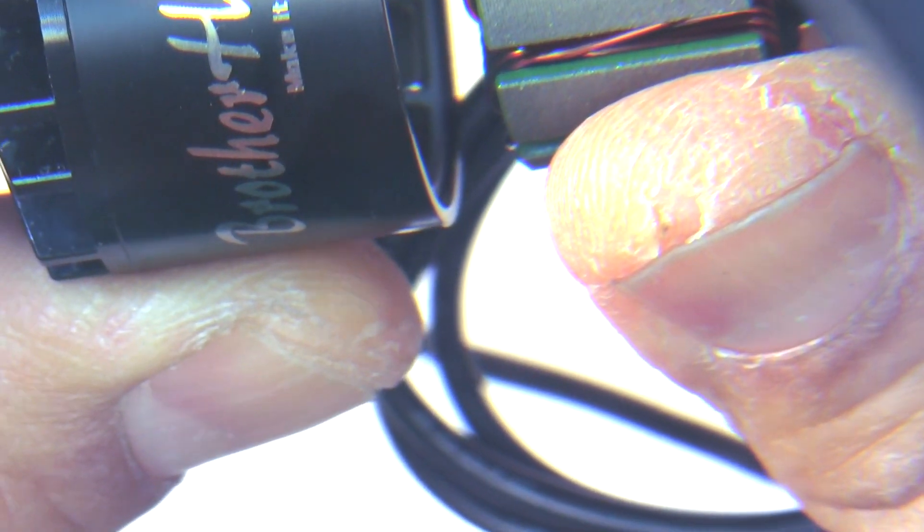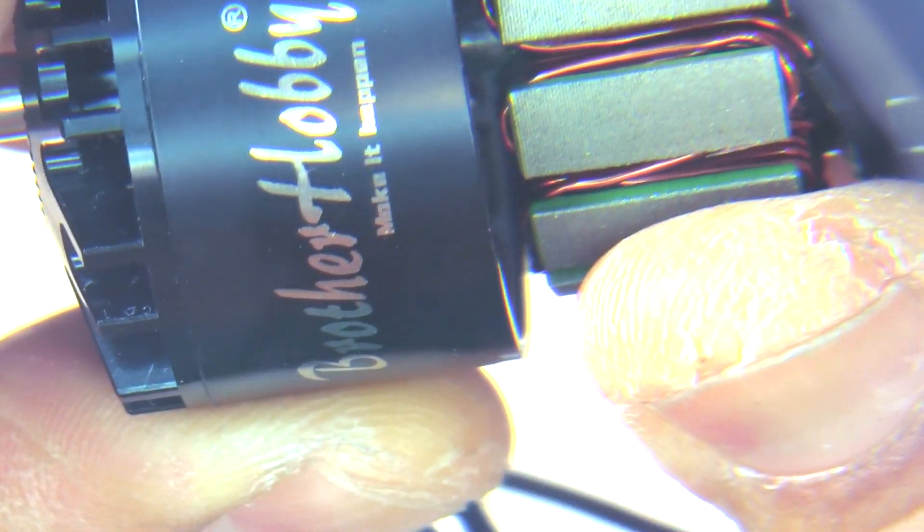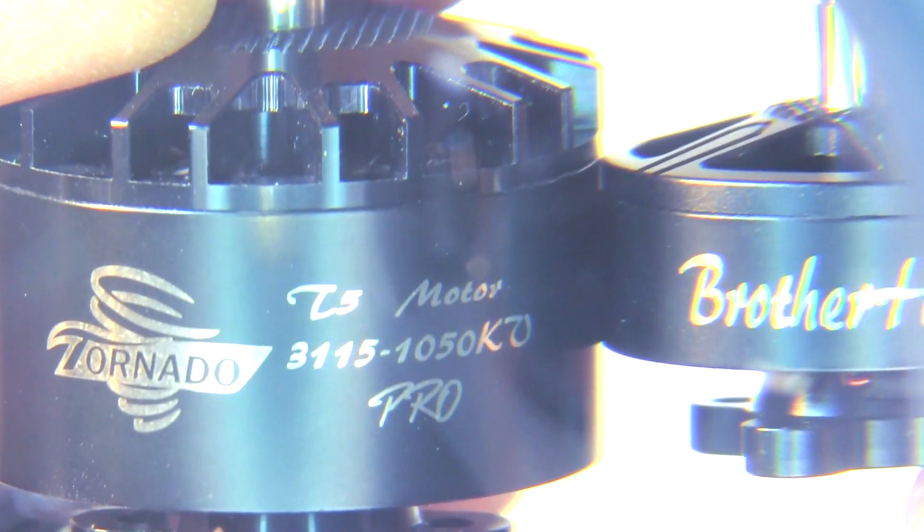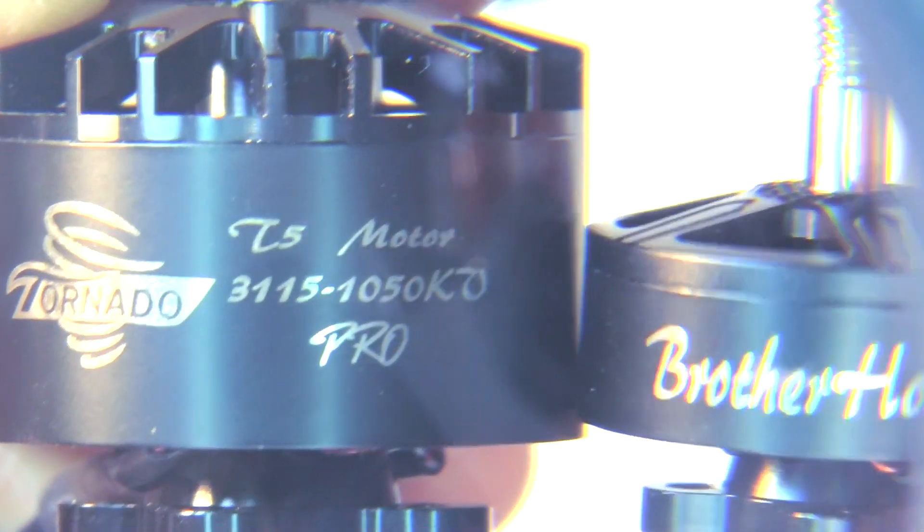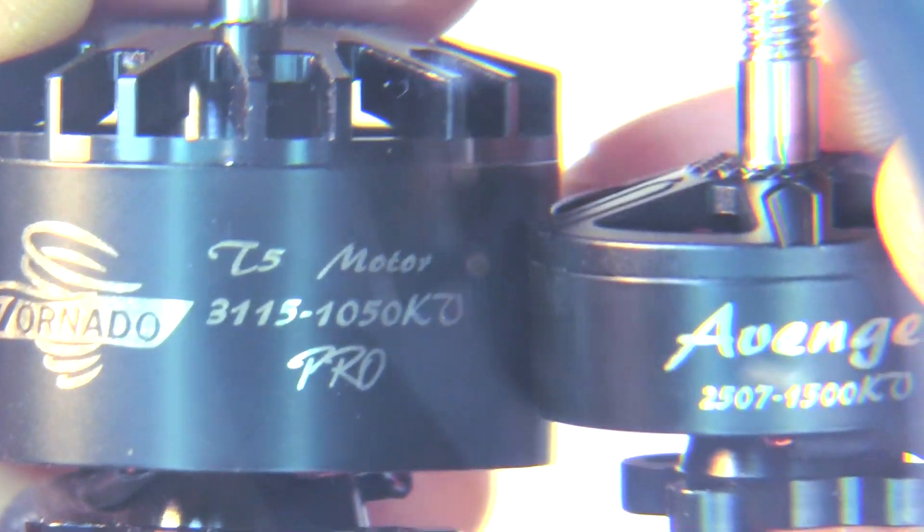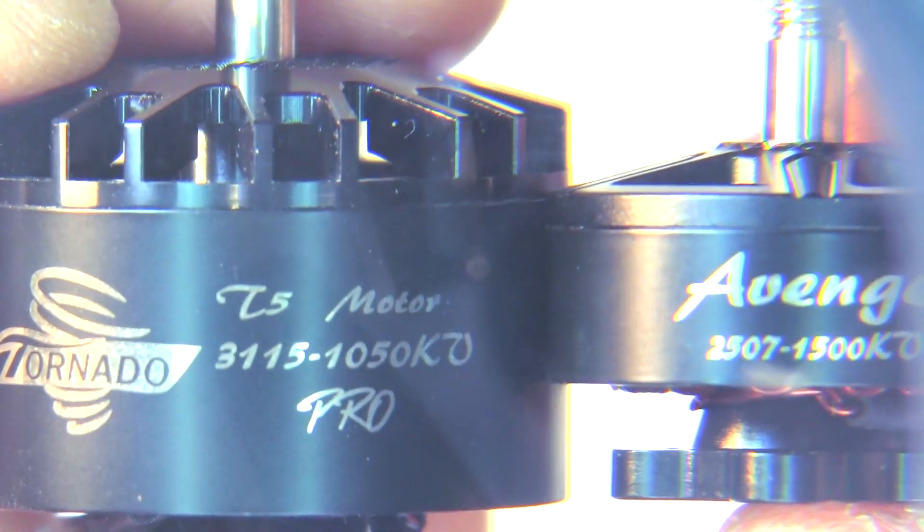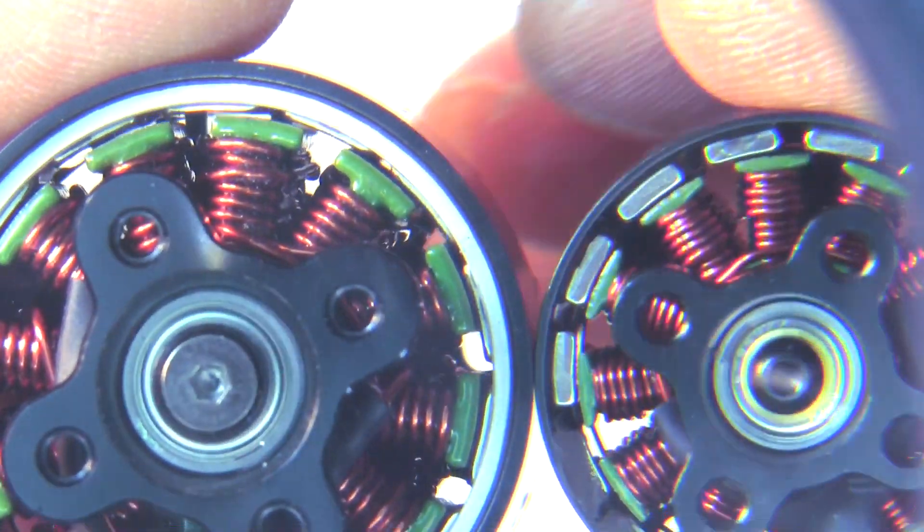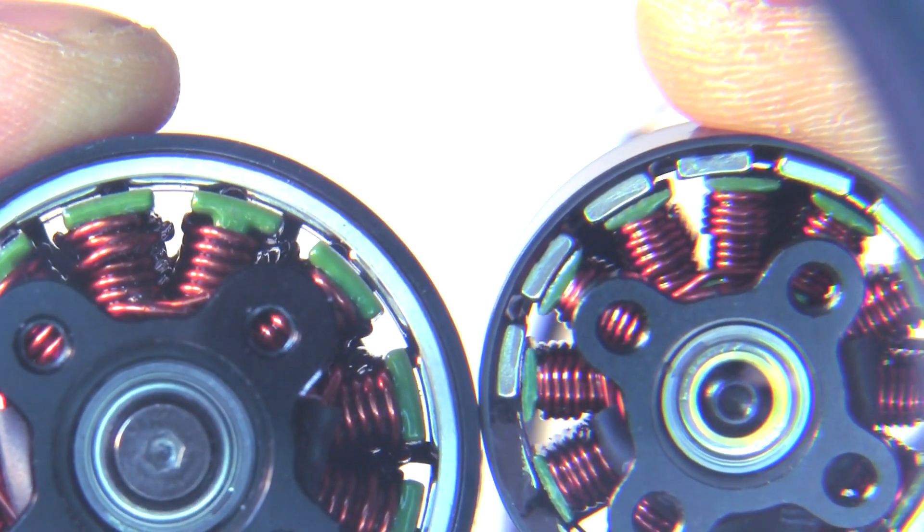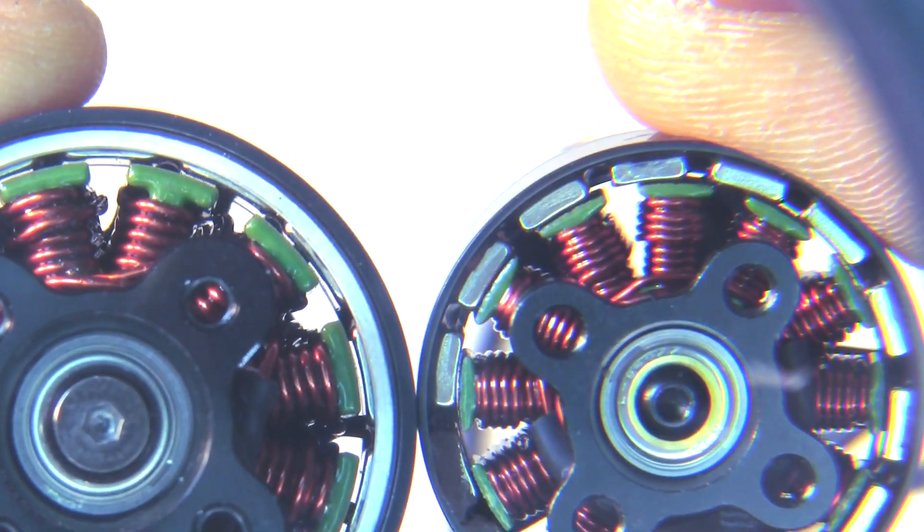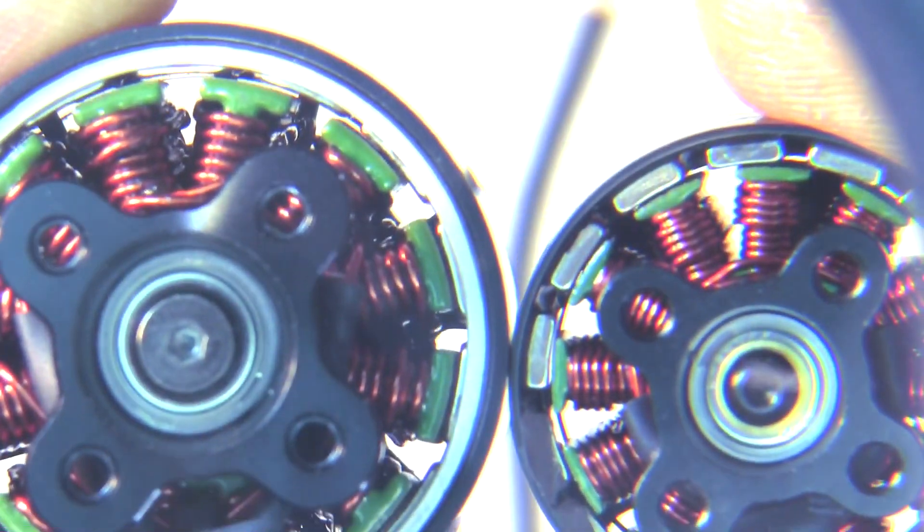From Brother Hobby, a big one. We'll put it back together and throw it in the thrust stand. Of course, gotta be careful not let it slam in there. Just for comparison, there's the 3115 and this one is the 2507, so you can see the difference in height right there. There's the air gap on the motor, looks pretty good. All right, so let's move on to the thrust test next.